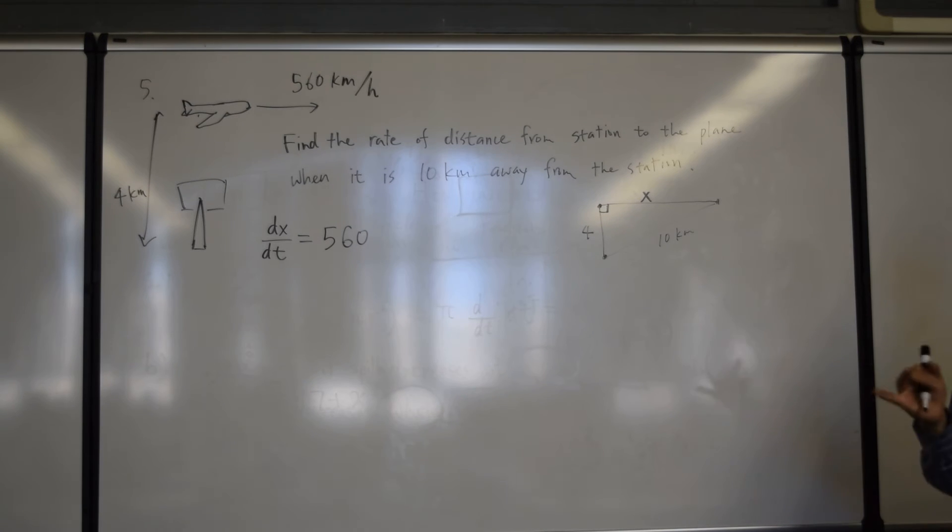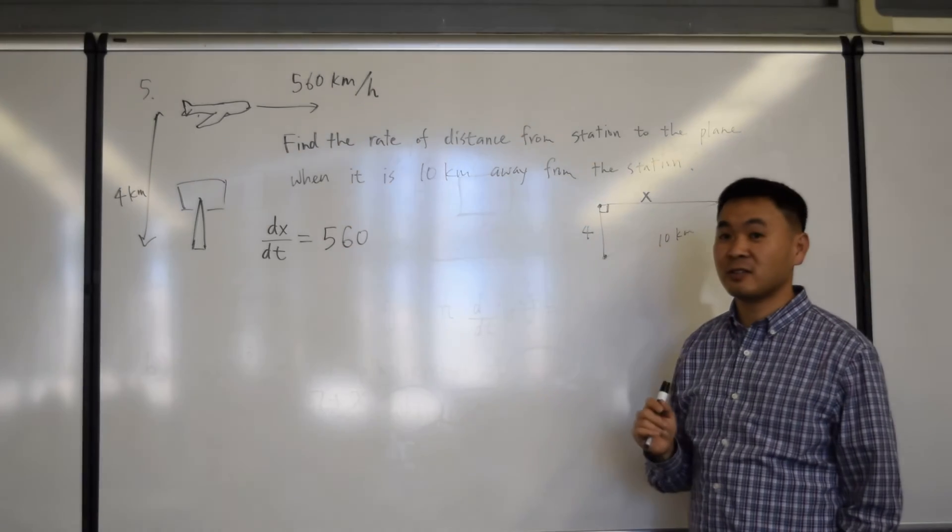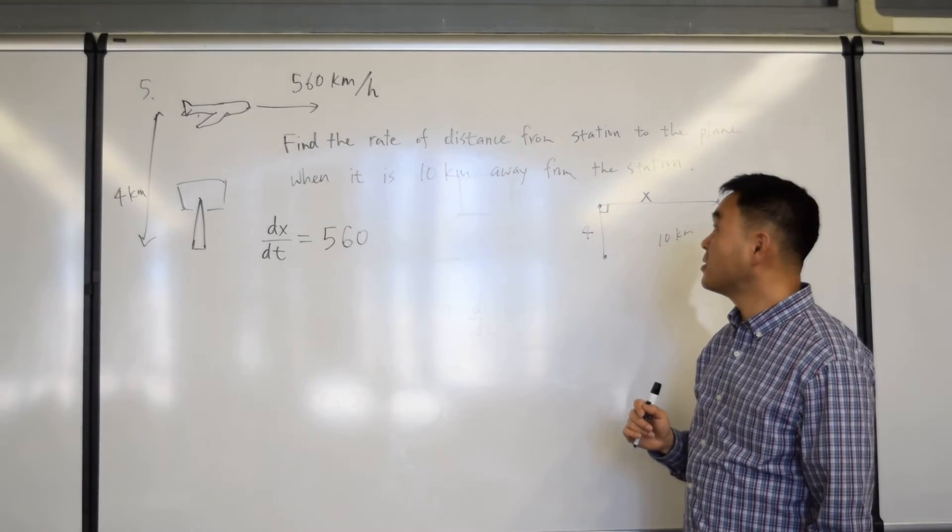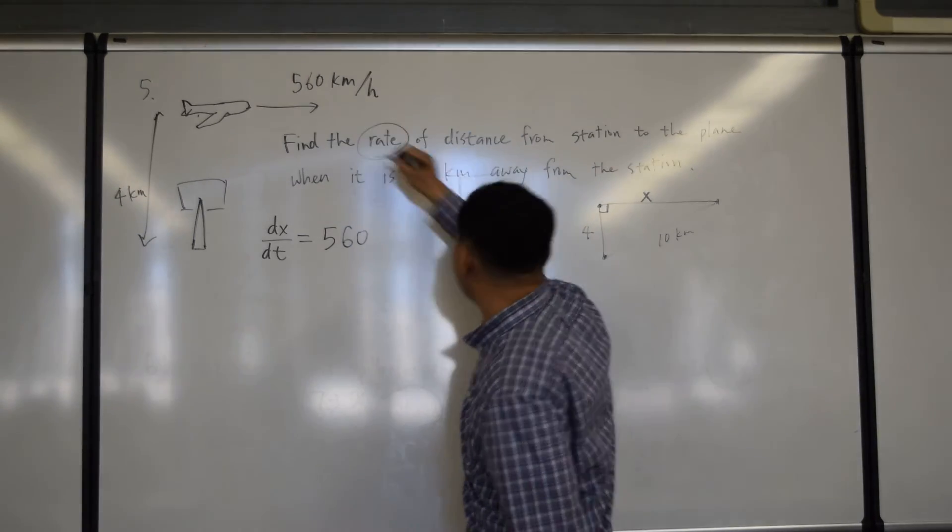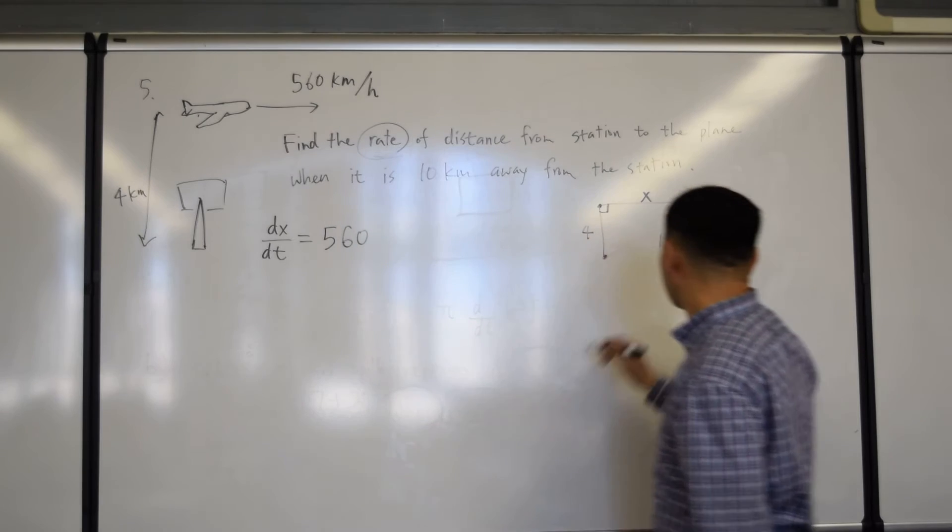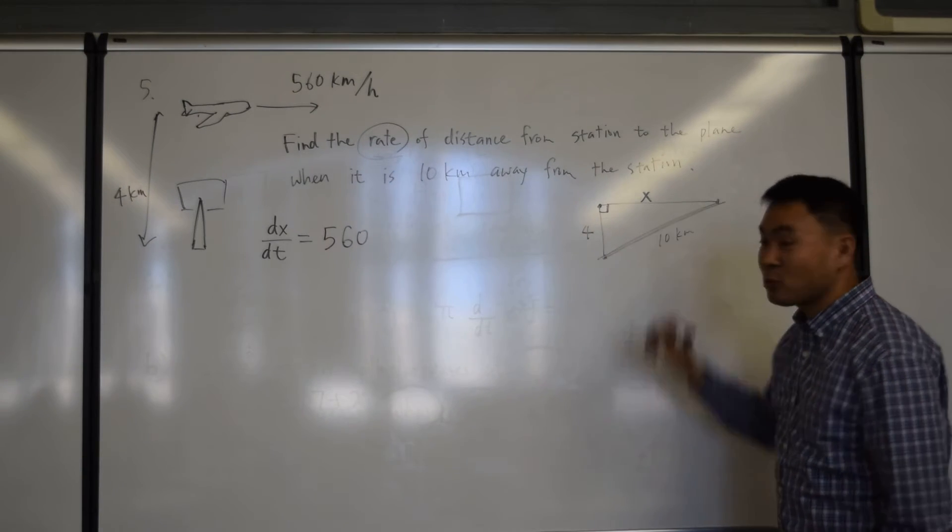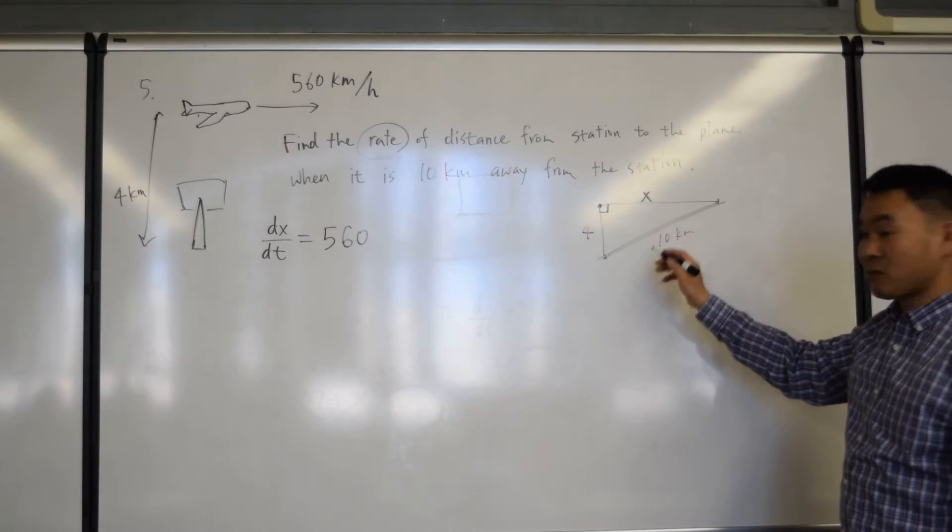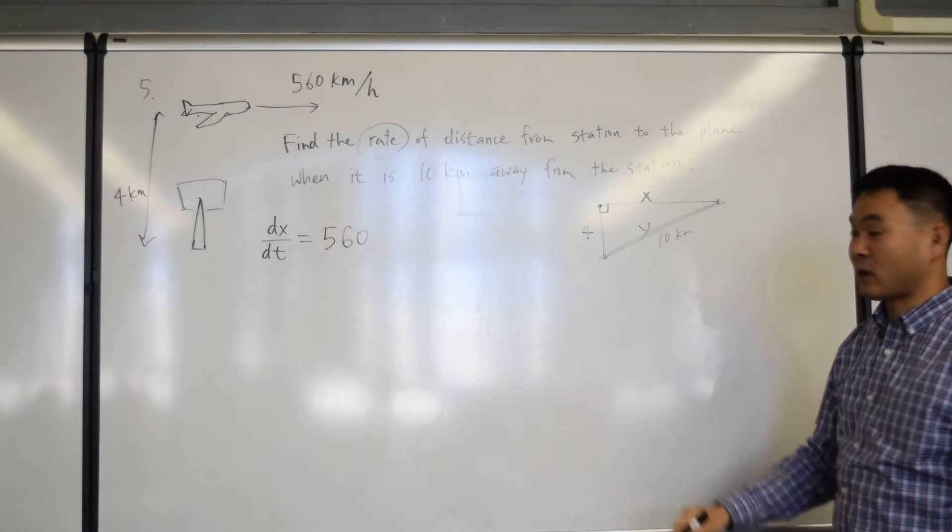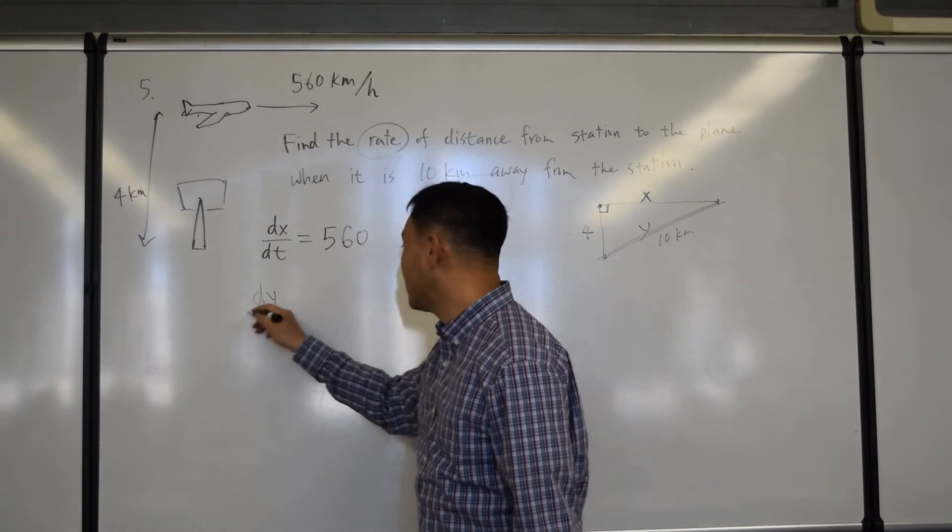You should have at least two derivatives if it's a related rates question. The rate is the other derivative here, so here's the station and the plane, and we're talking about the rate of change of this thing. And therefore, we have to come up with another variable for this. Let's say this is y. So the question is asking what? dy dt.